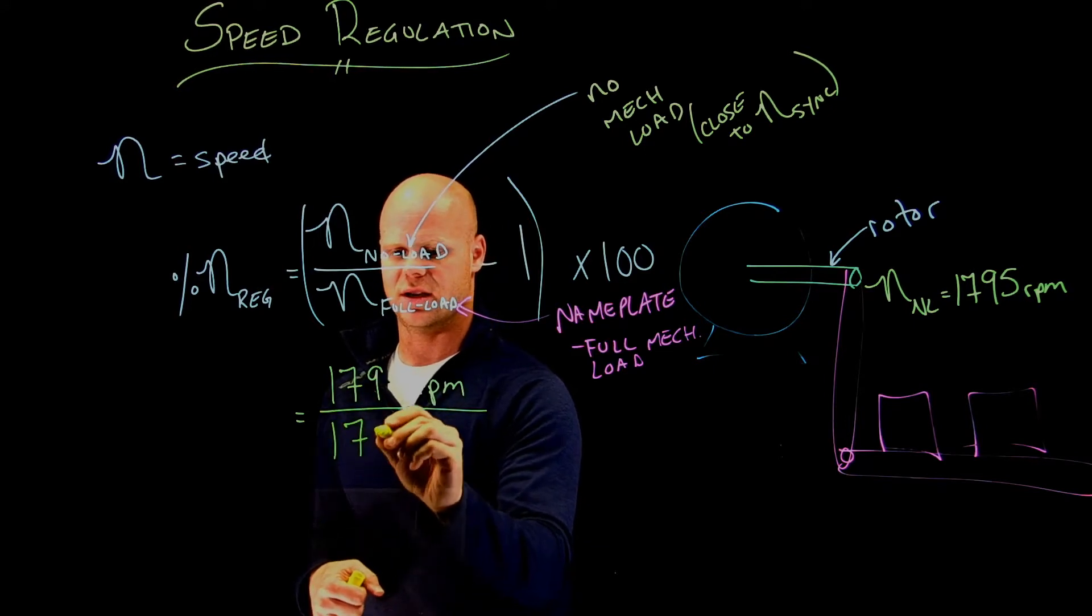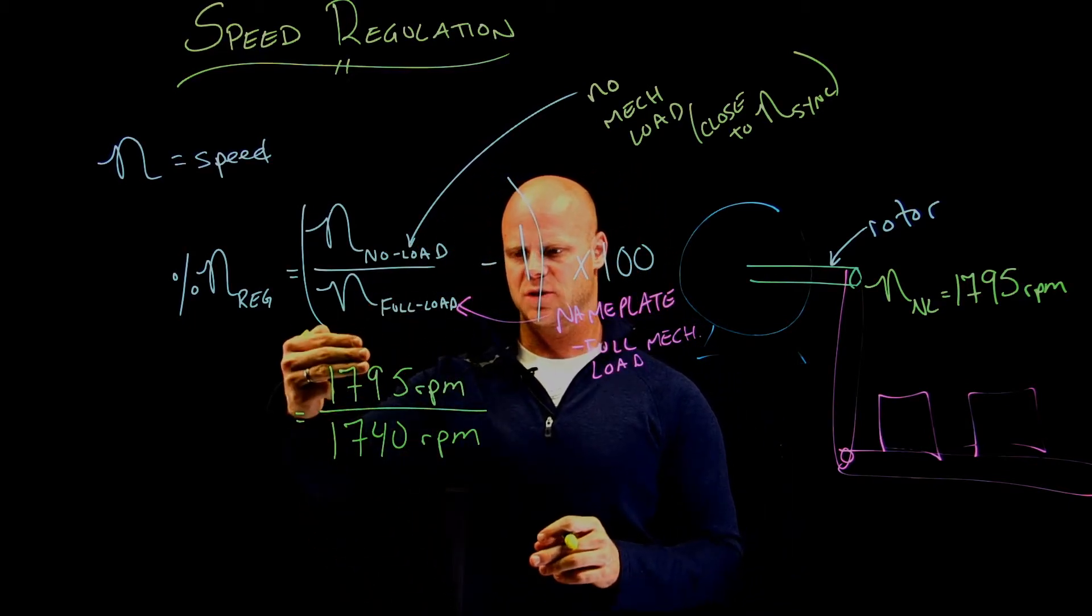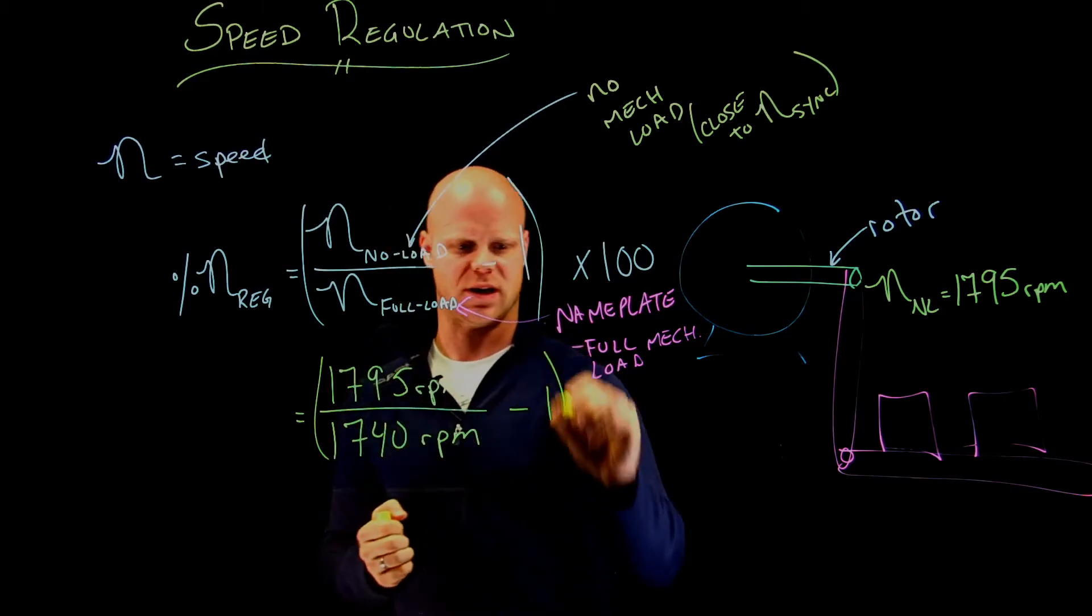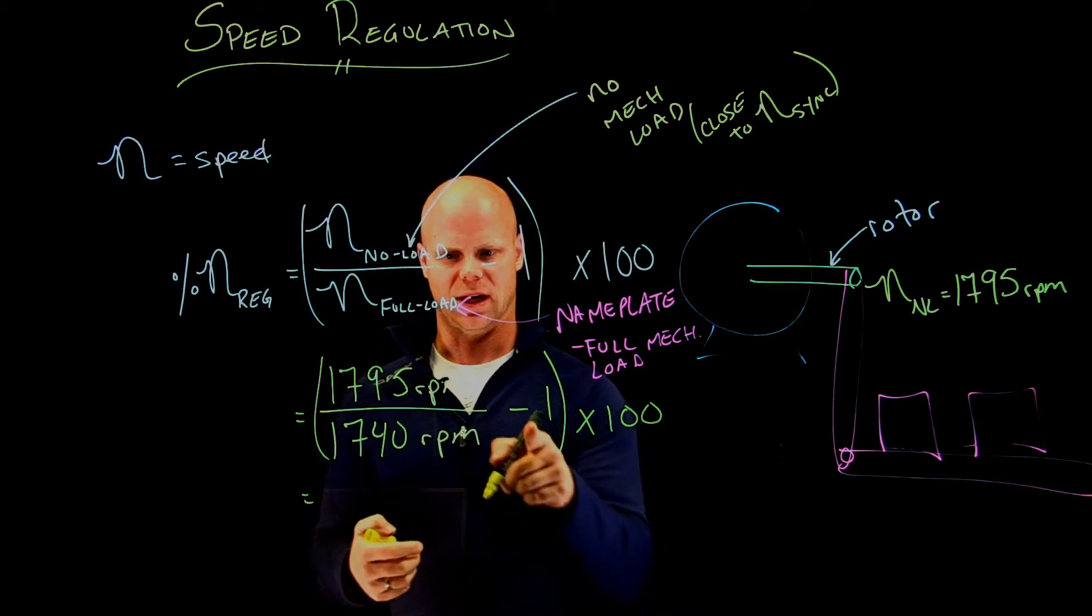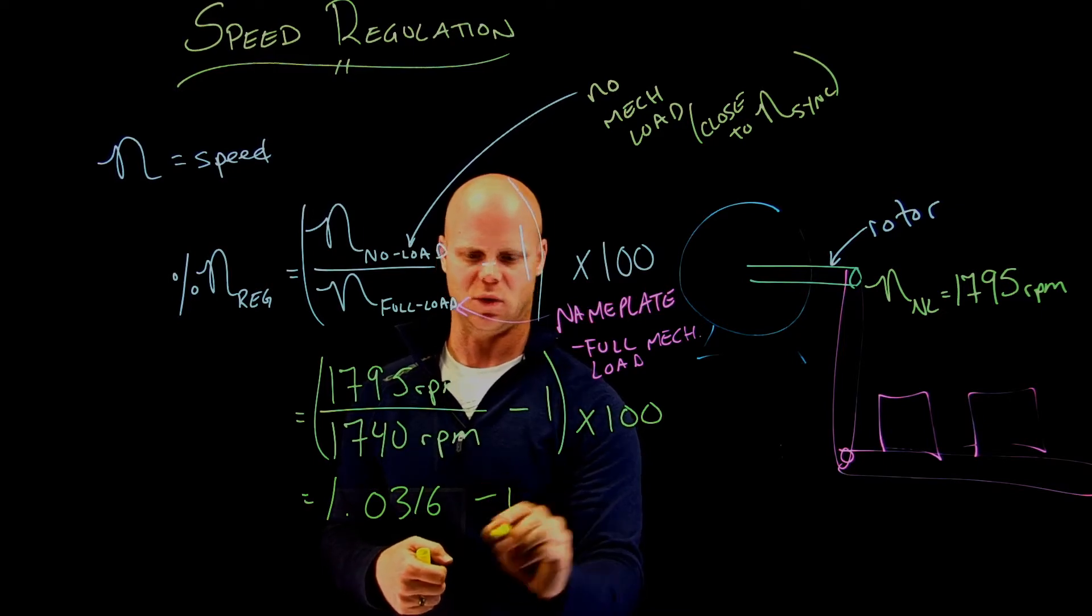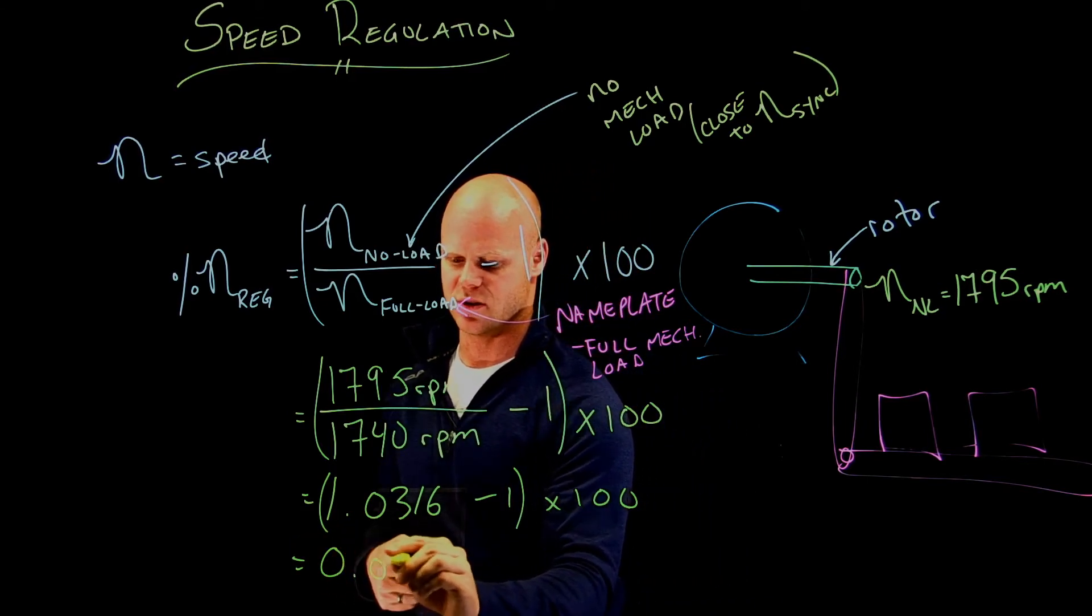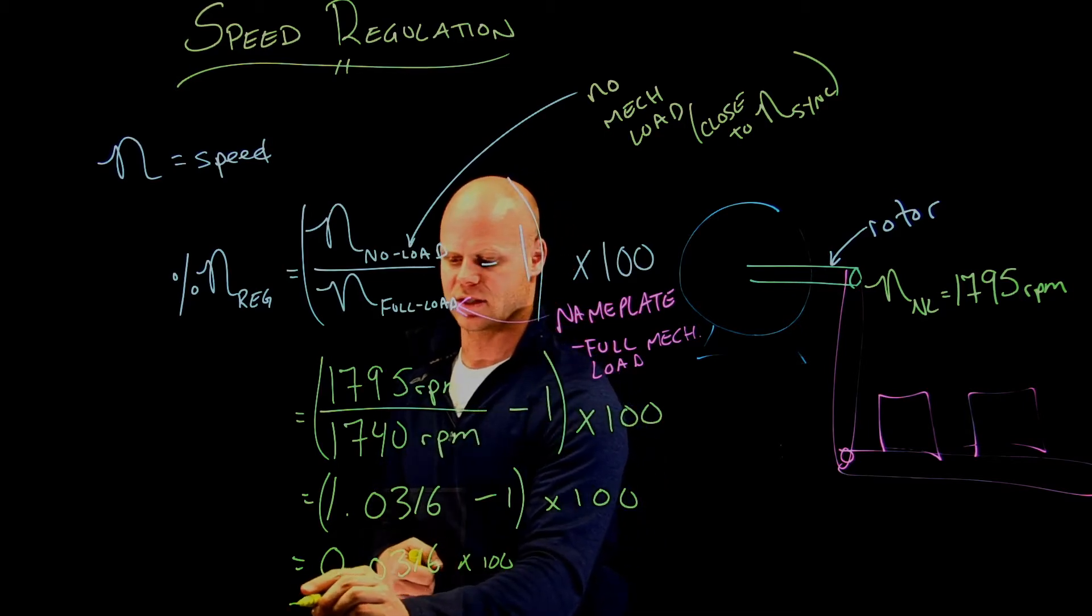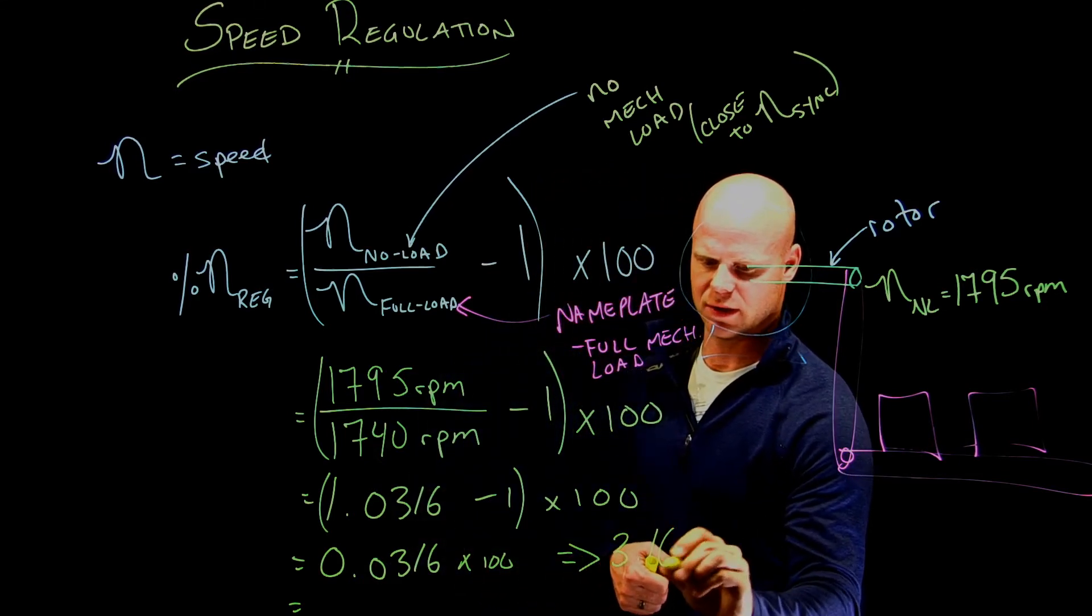As you look at this: my no-load speed is higher than my full-load speed—that's perfect—minus one, and we'll times this by 100 at the end. Really important that you remember the no-load speed is higher than the full-load speed. What you end up with: if you do this in the brackets, it's 1.0316 minus 1 times 100. So I get 0.0316 once I subtract the 1, times 100. Now this is expressed as a percentage: 3.16 percent.